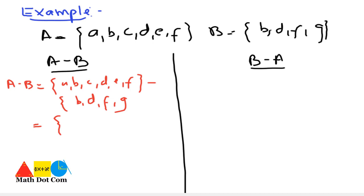For A minus B, we take A = {A, B, C, D, E, F} minus B = {B, D, F, G}. We must not include elements of B in the answer. A is not in B, B is in B so we exclude it, C is not in B, D is in B so exclude, E is not in B, F is in B so exclude. So A minus B = {A, C, E}.